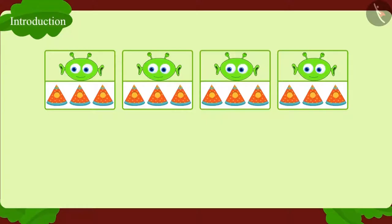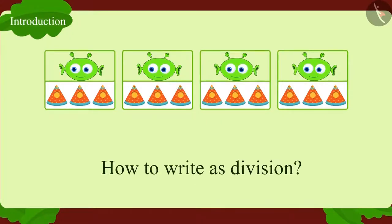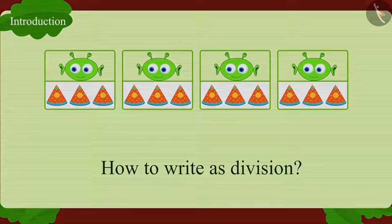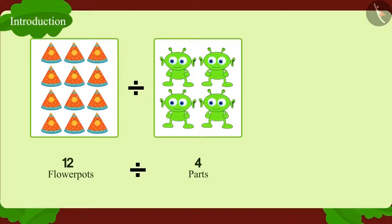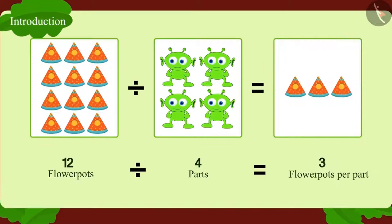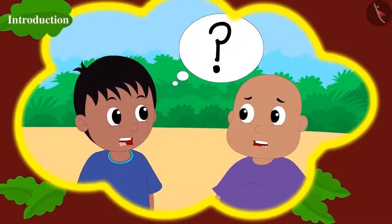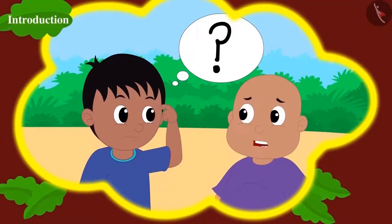How do we write it in the form of division? Twelve flower pots divided into four equal parts is three flower pots in each part.